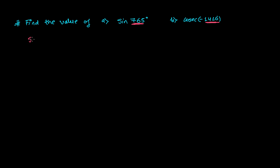Let me write the first question: sine 765. I need to represent 765 in the form of a multiple of 90. Always, always divide the angle by 90.